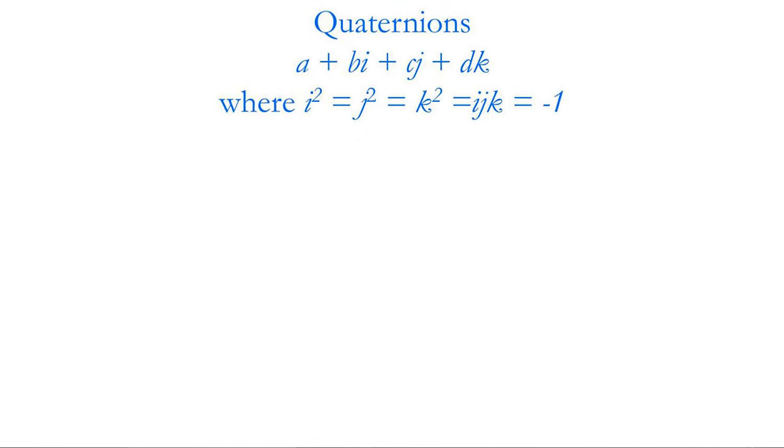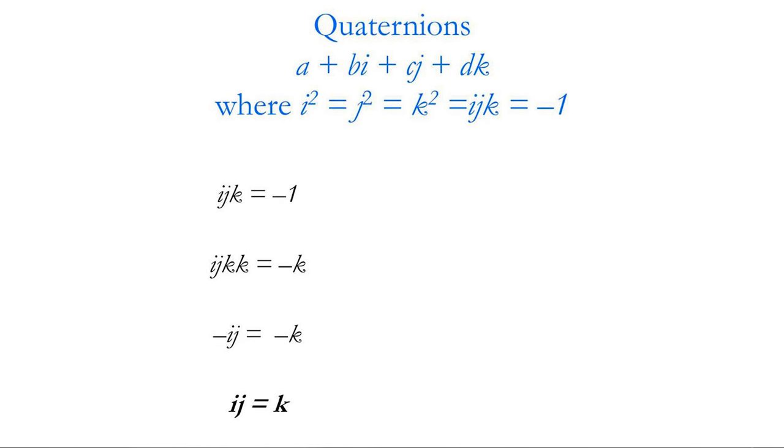So instead of triples, he was working with quaternions, quadruples: a + bi + cj + dk, on which he has the relationships i² = j² = k² = ijk = -1. I want to show you that this is a different kind of algebra from any that was created before, because it's not commutative. We'll see, for example, that ij is not equal to ji, but is equal to minus ji.